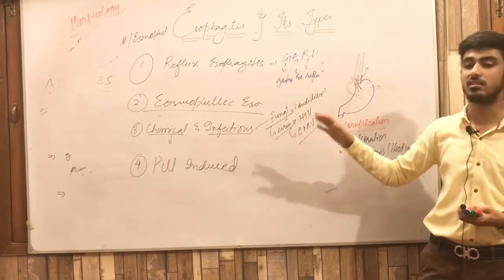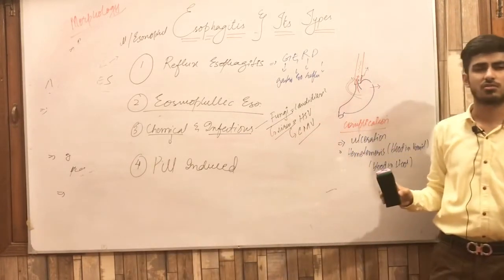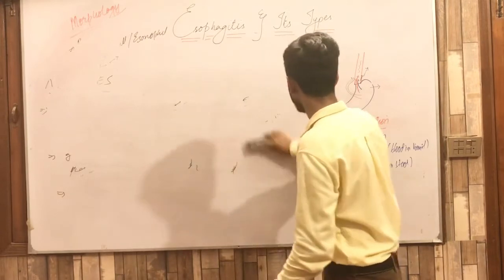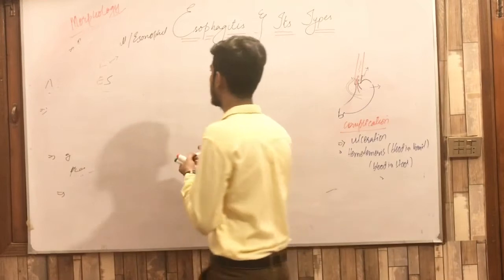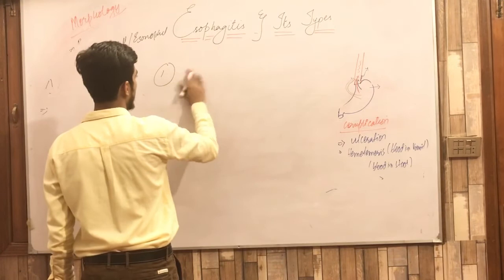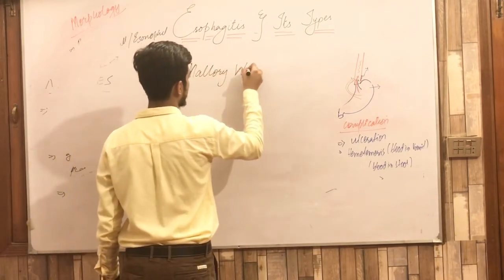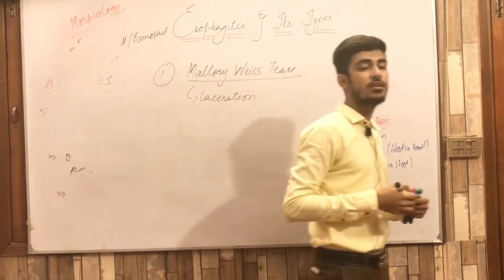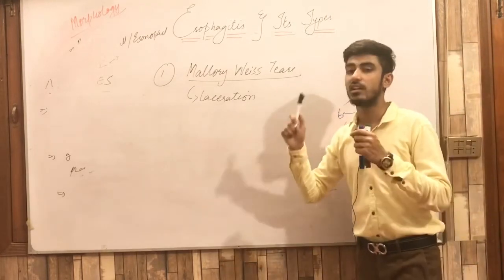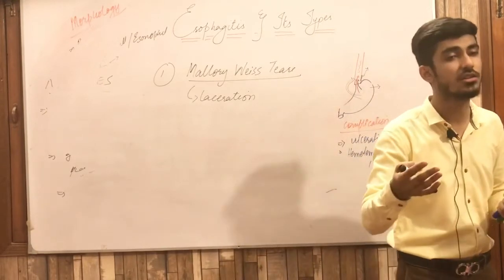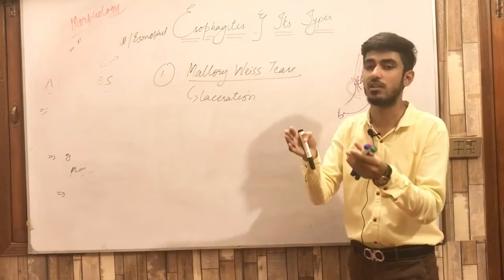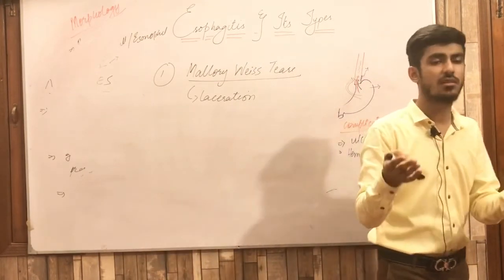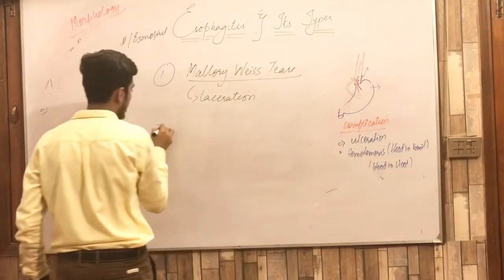Those are the four types of esophagitis. Now I will briefly discuss two related esophageal diseases. The first is Mallory-Weiss tears, which is basically laceration of the esophagus. The cause is prolonged vomiting — prolonged vomiting creates tears and lacerates the esophagus. This condition is not very dangerous and may be self-healing.